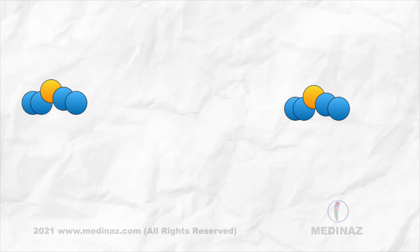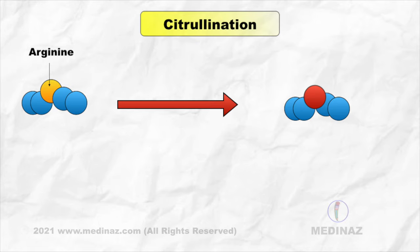Now there should be an autoantigen against which these autoantibodies work. There is a process called citrullination in which amino acid arginine is converted into citrulline. Sometimes, our immune cells fail to recognize this protein as self-antigen.